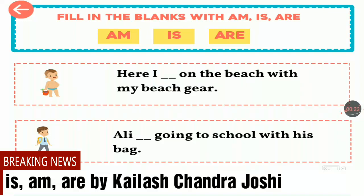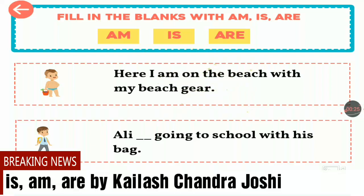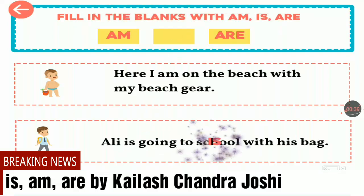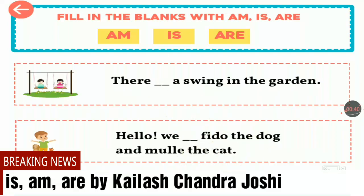Here I am on the beach with my beach gear. Ali is going to school with his bag. Ali is a singular person, so 'is' is right here — Ali is going to school.